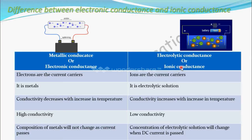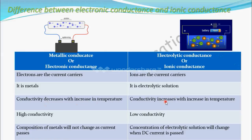That is why it is called ionic conductance. Electronic conductance occurs in metals, while electrolytic conductance occurs in electrolytic solutions. For metallic conductance, conductivity decreases with increase in temperature, but for ionic solutions, conductivity increases with increase in temperature.